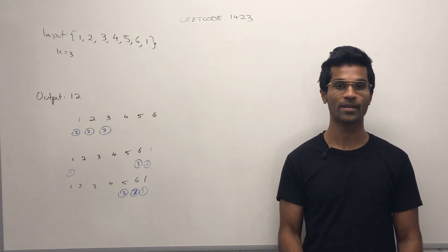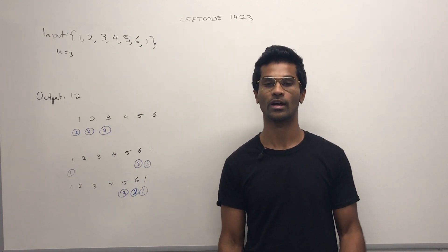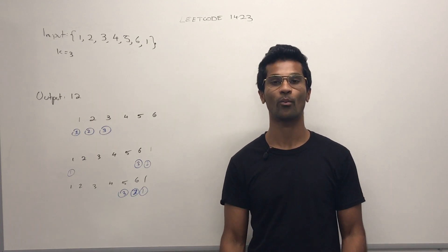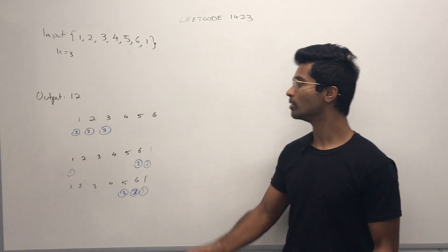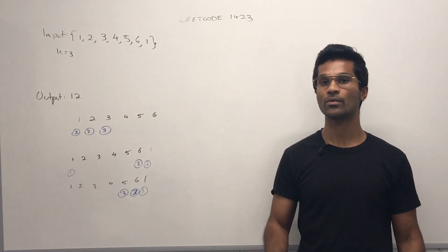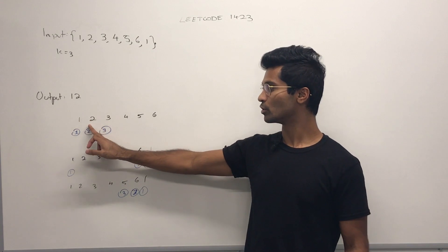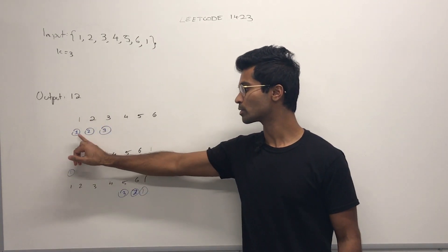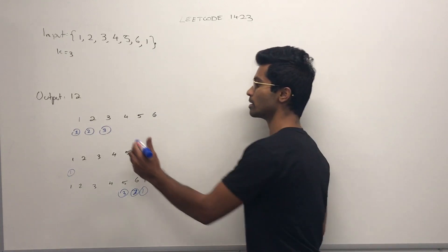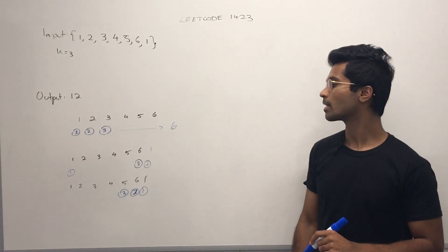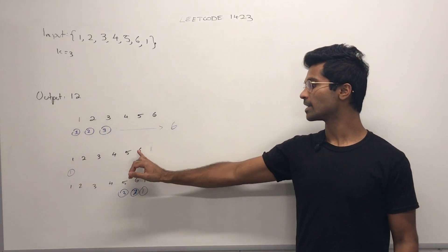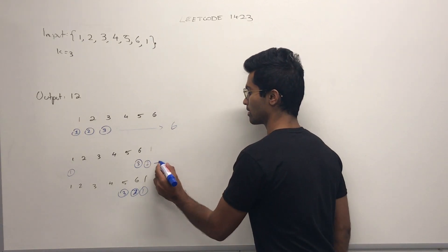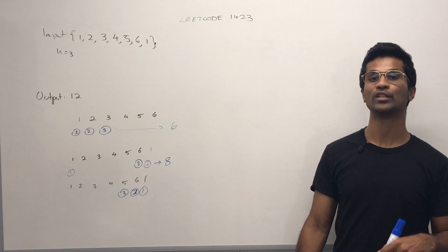The input is going to be an integer array and an integer k, which is the number of moves we're allowed. The output is going to be the maximum sum we can get using our moves. A move is defined as selecting a number from either the beginning or the end of the array. For example, if we have three moves for this array — say we select the first one, then the two, then the three — our score is going to be six. If we select the first one as our first move, the last one as our second move, and the last six as our third move, our score is going to be eight.